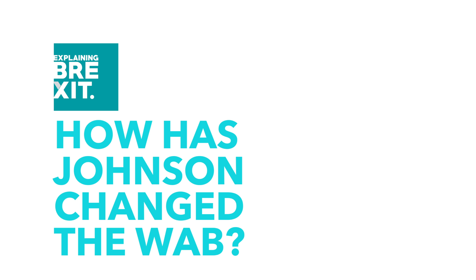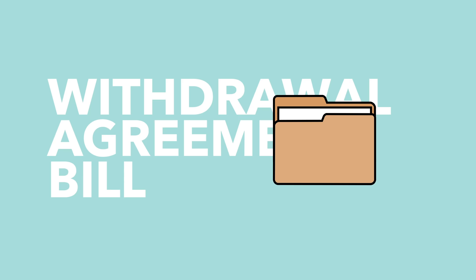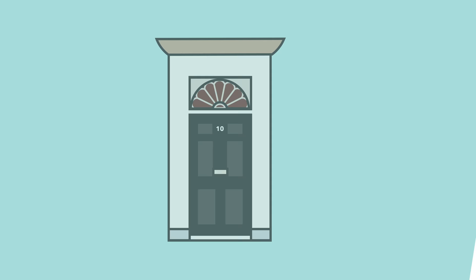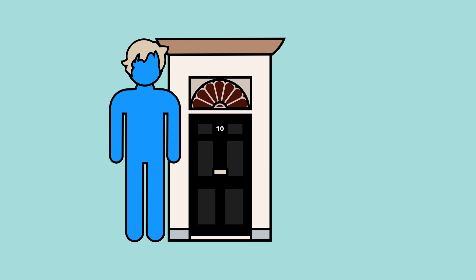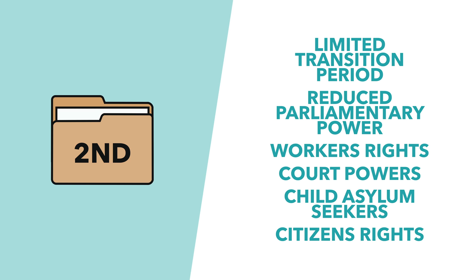Hello and welcome to another one of our Brexit Explained videos. In this one we're going to take a look at how the current version of the withdrawal agreement bill differs from the one that was offered to parliament in October. The Conservatives brought the withdrawal agreement bill back to the house in December, but they made a few changes — we think there are basically six big changes worth pointing out.